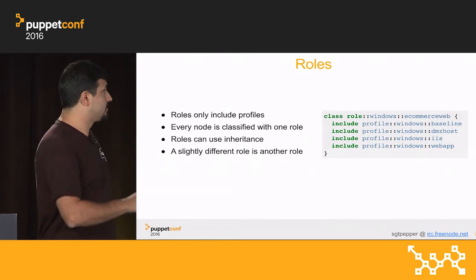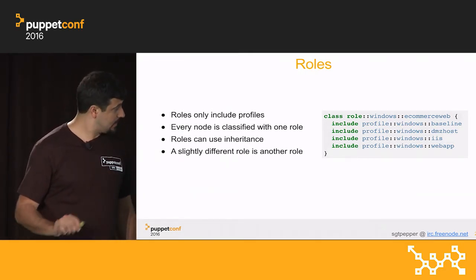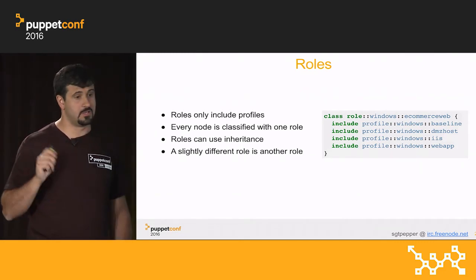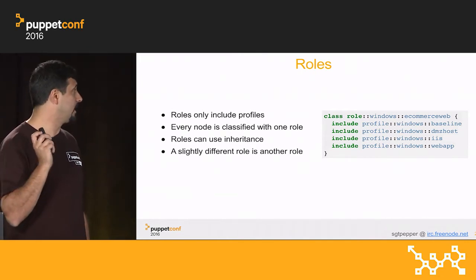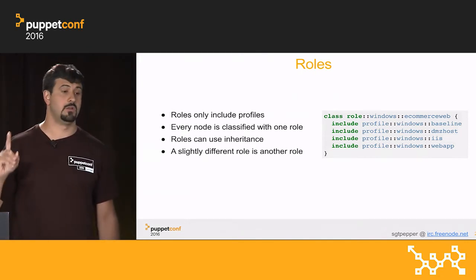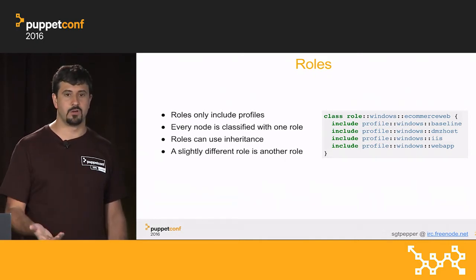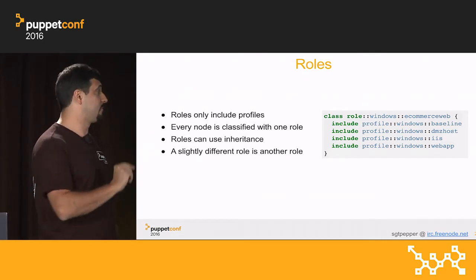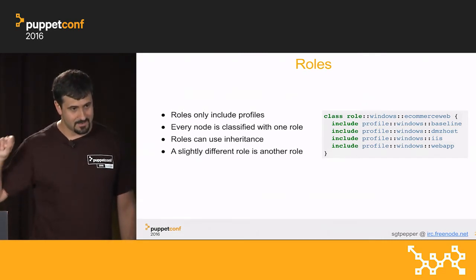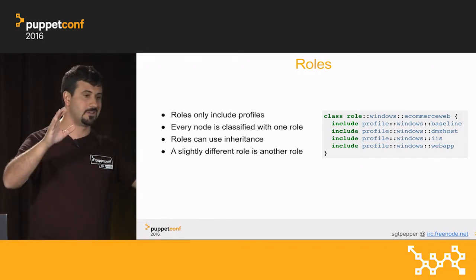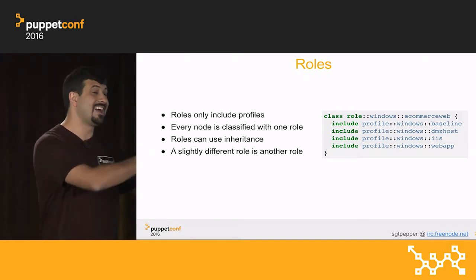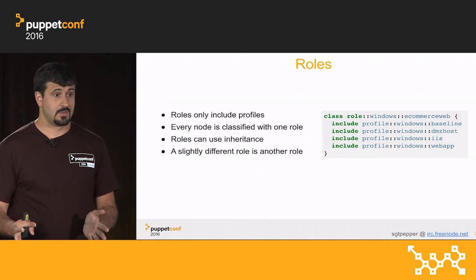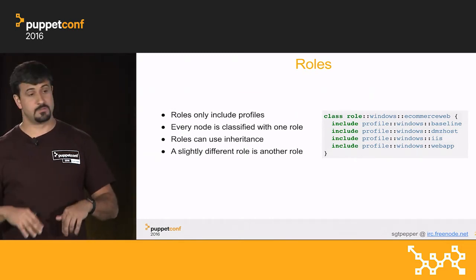Let me talk about roles. We are very strict with roles: roles can only include profiles. Every node is classified with one role, because that's effectively how you get a quick overview of what that node is doing. Roles can use inheritance, but very importantly, a slightly different role is another role — it's not the same role. When you're looking at your systems, you don't say, 'Oh, that's kind of a web server.' It's either a web server or it's something else.